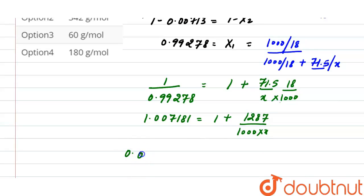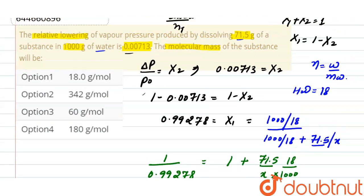0.007181 equals to 1287 divided by 1000 into x. Now after solving, the molecular weight of solute here will be 179.22 gram per mole, which is nearly equals to 180 gram per mole. And the correct option here will be option 4.